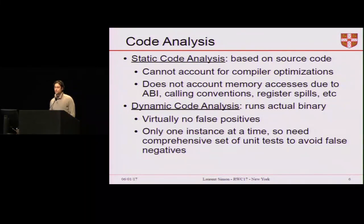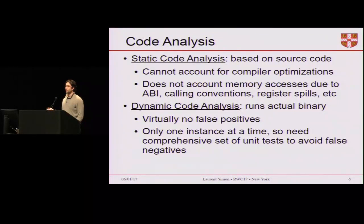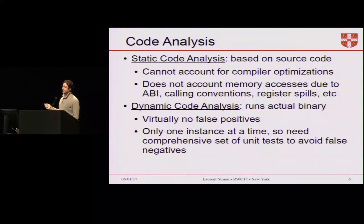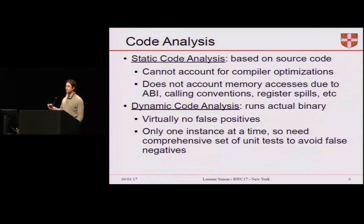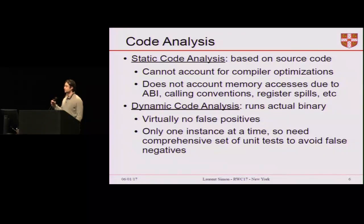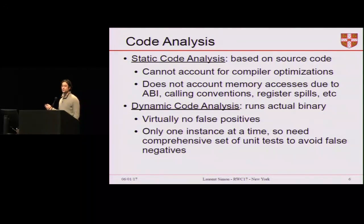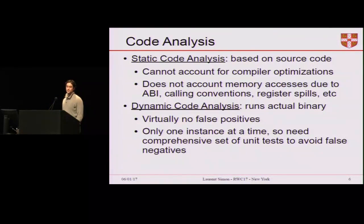What we realized early on is that there was no tool to help developers assess their program, so we decided to create one. The first approach is static code analysis, based on analyzing the source code of the program. Because of this, it cannot account for compiler optimizations, nor for memory accesses due to the application binary interface or register spills. Register spills refer to the fact that as a compiler runs out of registers, it spills them onto the stack temporarily to reuse those registers. So we opted for dynamic code analysis, which runs the actual binary generated by a compiler. That gives us virtually no false positives, at the expense of needing a comprehensive set of unit tests for good code coverage.